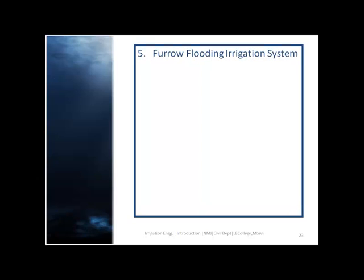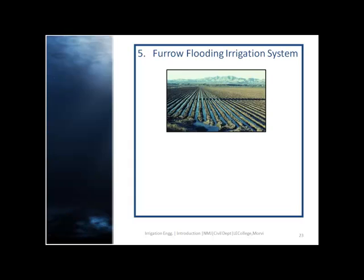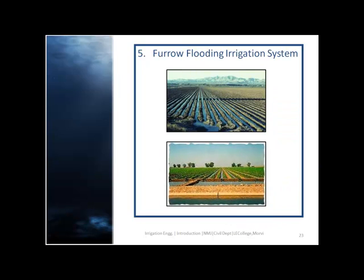The next method is furrow irrigation. In flooding methods, water covers the entire surface, while in furrow irrigation only one-fifth to one-half of the land surface is wetted by water. This results in less evaporation, less flooding of soil, and permits cultivation sooner after irrigation.